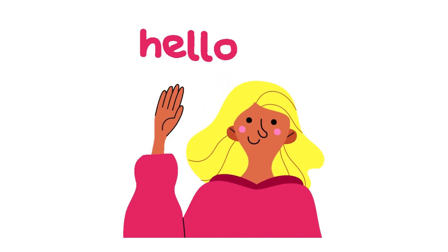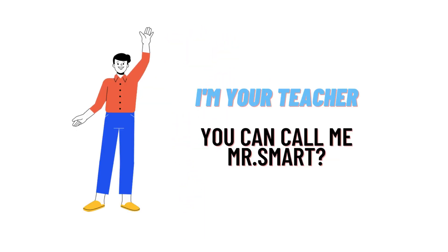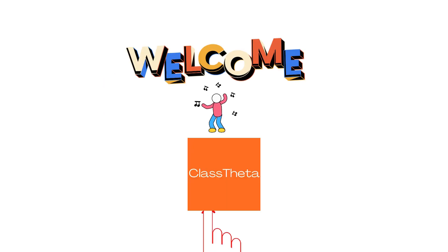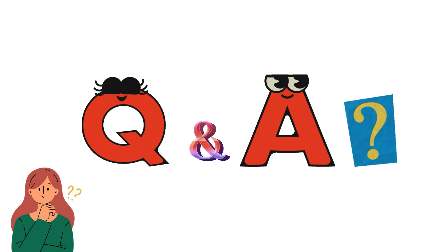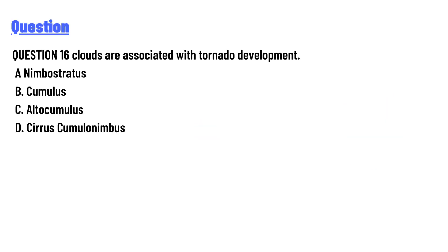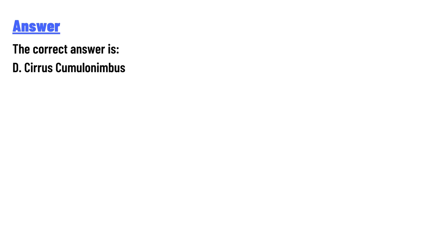Hello everyone, I am Akrash, your teacher. Welcome to class twitter.com. Today's question is: which clouds are associated with tornado development? A) Nimbostratus, B) Cumulus, C) Altocumulus, D) Cirus Cumulonimbus. The answer is D) Cirus Cumulonimbus.